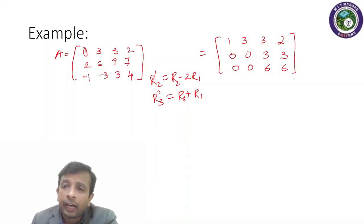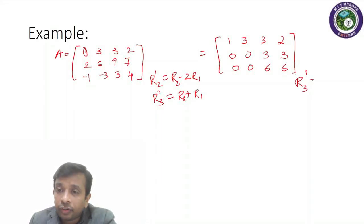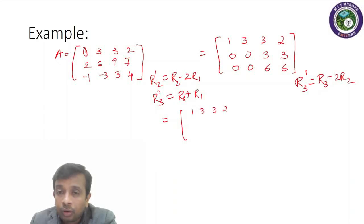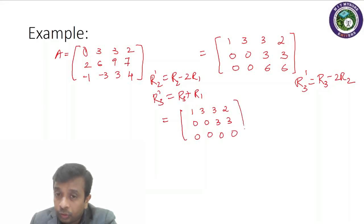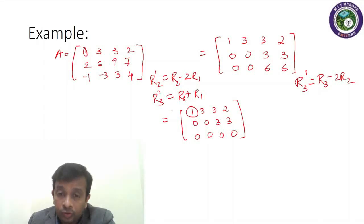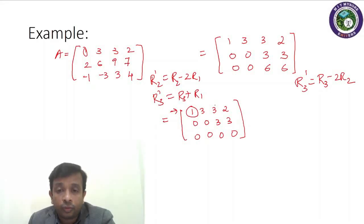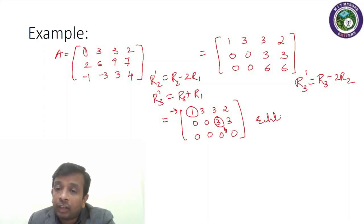Applying one more operation R3' = R3 minus 2·R2: keeping row one as 1, 3, 3, 2, row two as 0, 0, 3, 3, and computing row three as 6 minus 2·3 = 0 and 6 minus 6 = 0, so row three becomes 0, 0, 0, 0. Now the leading entries in each nonzero row are nonzero, and below each leading entry there is a column of zeros — row two has leading entry 3 with zeros below it. Hence the matrix is now in row echelon form.